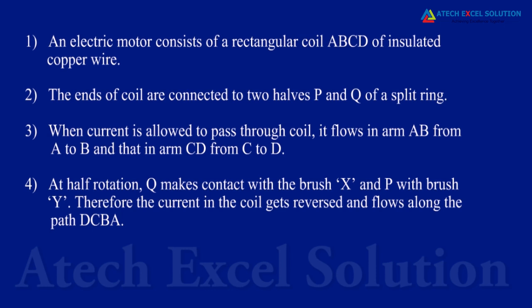An electric motor consists of a rectangular coil ABCD of insulated copper wire. The coil is placed between the two poles of a magnetic field such that the arm AB and CD are perpendicular to the direction of the magnetic field. The ends of the coil are connected to two halves, P and Q, of a split ring.